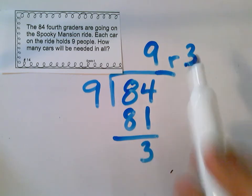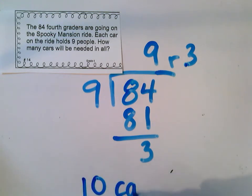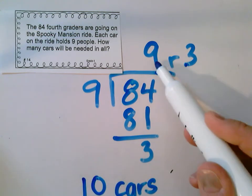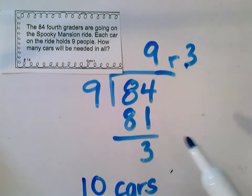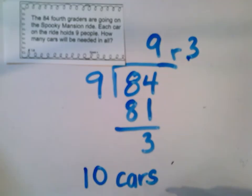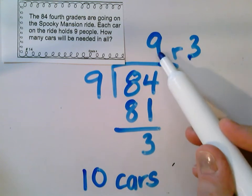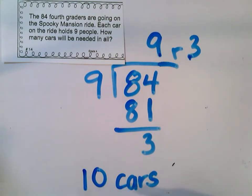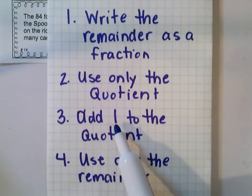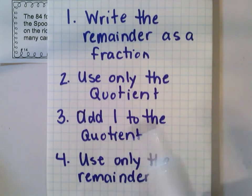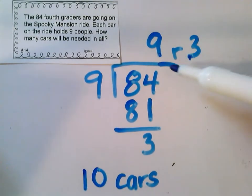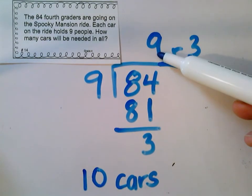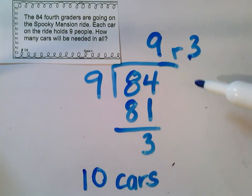They want to go on the ride too, so in fact we're going to need 10 cars to hold all of the kids — 9 full cars and one more car to hold these last 3 students. So that's going to be 10 cars that we need. Our answer is 1 more than 9. We're using the strategy of adding 1 to the quotient so that we can include all of the things we're using. We add 1 more to the 9 to make 10 cars so we can fit everybody.